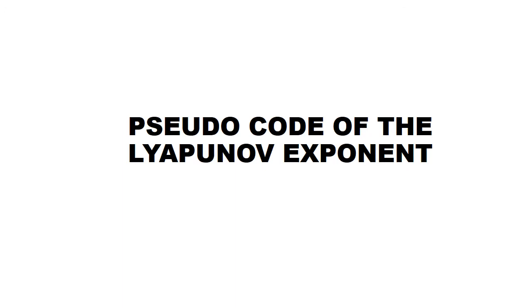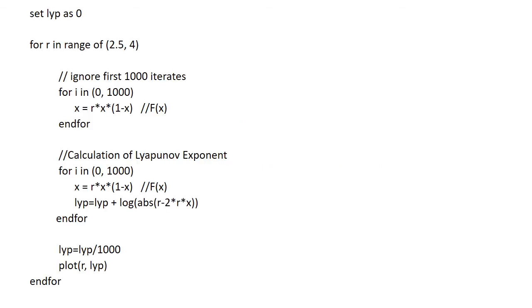We will move on to the pseudocode of the Lyapunov exponent for the logistic map. Here we set the variable lyap to 0. We are going to calculate the Lyapunov exponent for r ranging from 2.5 to 4. Assume f(x) is equal to rx(1-x) that is the equation of the logistic map.